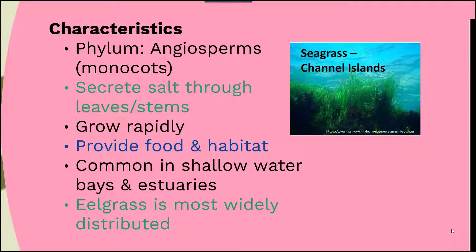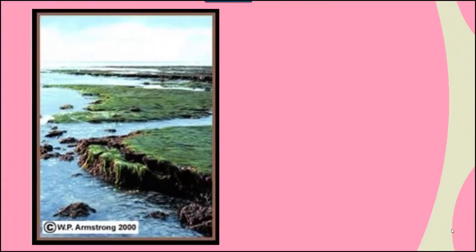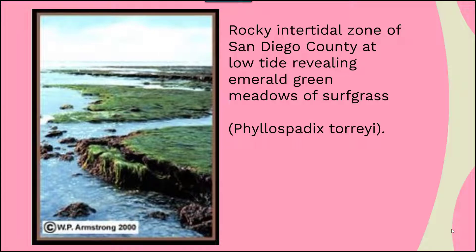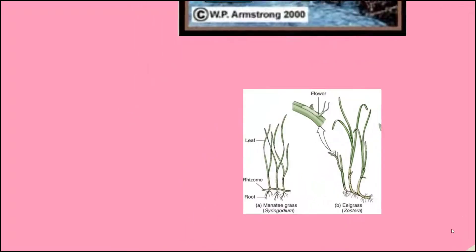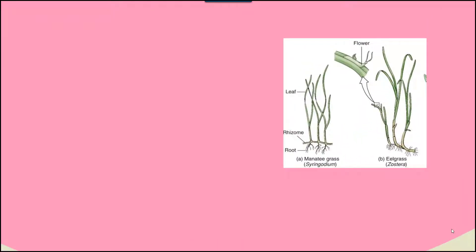We find seagrasses in shallow waters of bays and estuaries. Eelgrass is something that is widely distributed and quite prevalent within many marine ecosystems close to shore. Within the rocky intertidal zone of San Diego County, at low tide we have emerald green meadows of surf grass — a variety of grasses that occur in different regions along the coast, both just under the subtidal region and in the intertidal region.